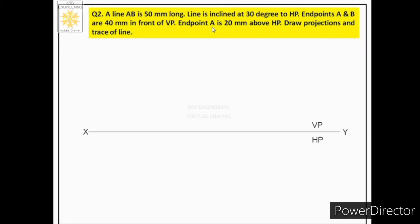Let us plot the front and top view of endpoint A. To draw them, first we mark a reference point on the XY line and call it small letter A0. Endpoint A is 20 mm above HP, so we plot this distance on the opposite plane, that is VP — above the reference line. We align our scale vertically and sketch a continuous thin projection line of 20 mm, labeling its end as A dash, representing the front view of endpoint A.